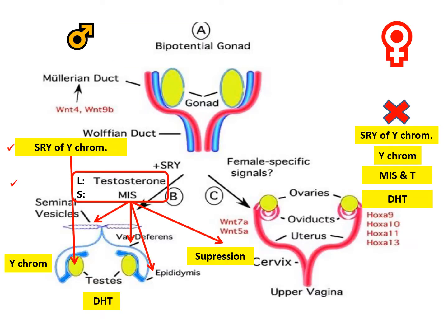In intrauterine life, the male individual should have a Y chromosome with a sex-determining region on its short arm. But some individuals with a mutation of this gene will have a Y chromosome that is not functioning. So the gonads or testes will not be functioning — they will not secrete testosterone from the Leydig cells, and will not secrete Müllerian inhibitory substance from Sertoli cells.